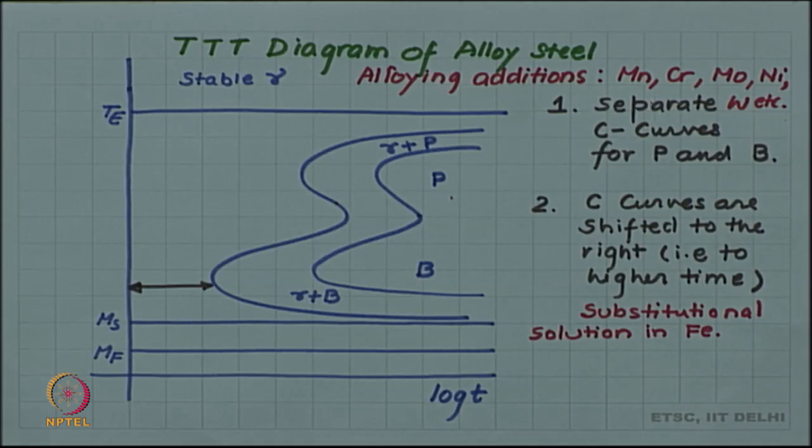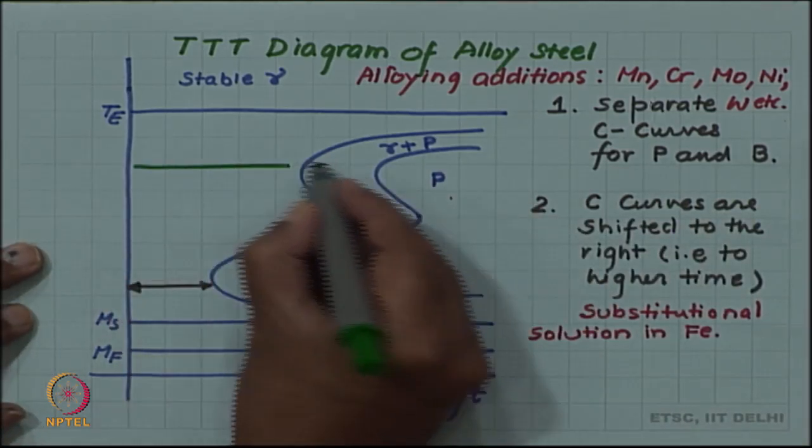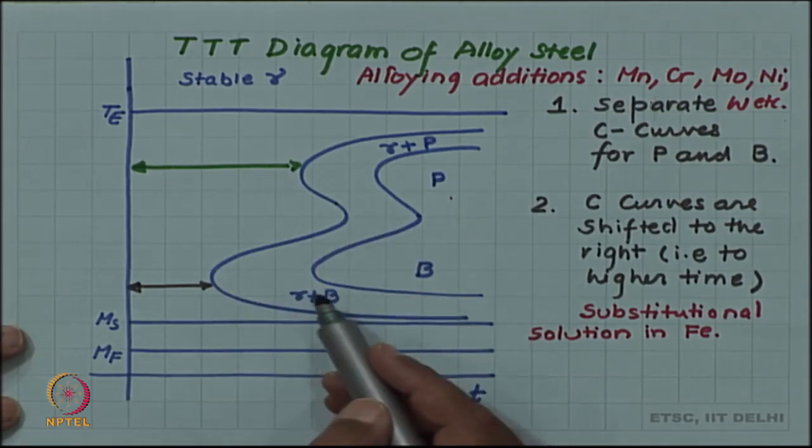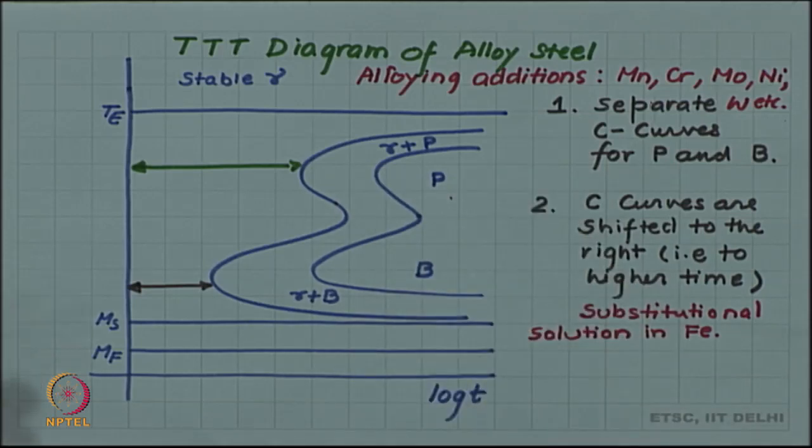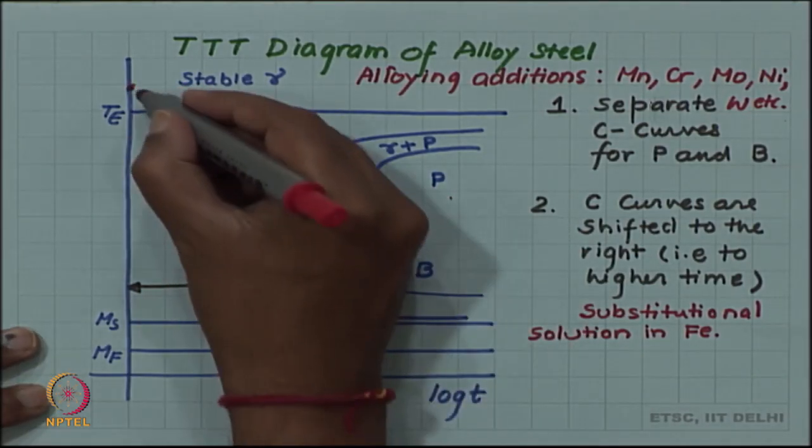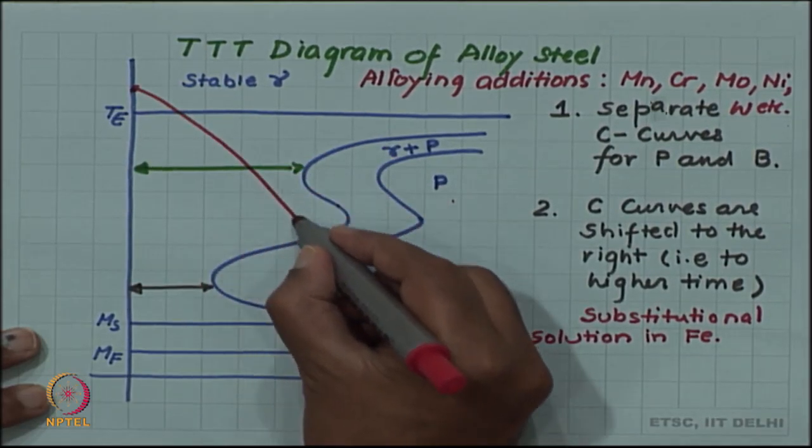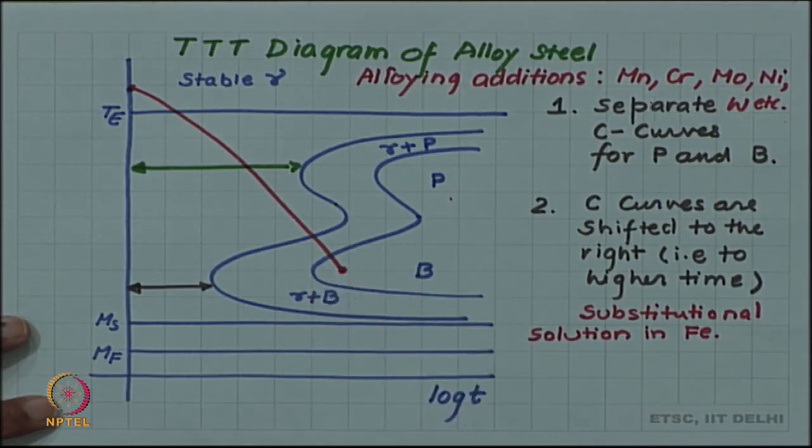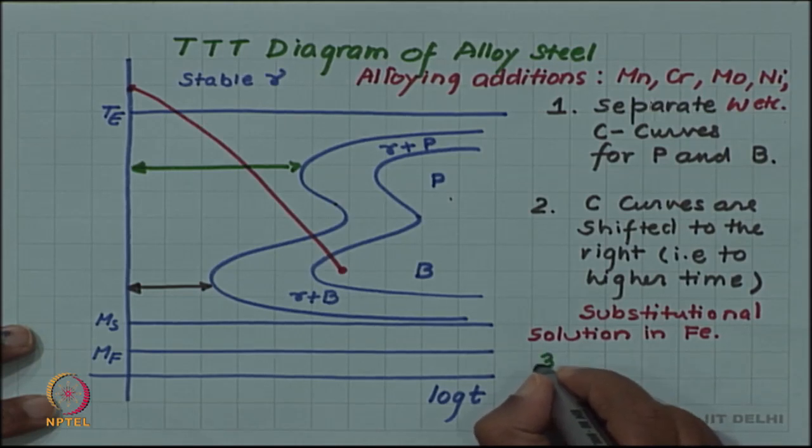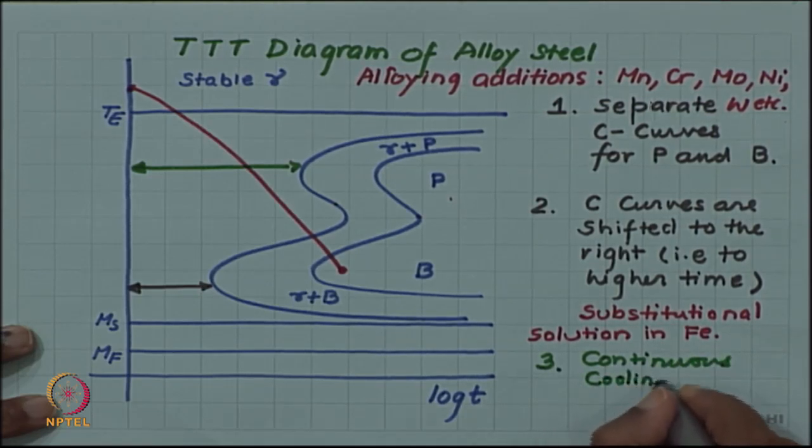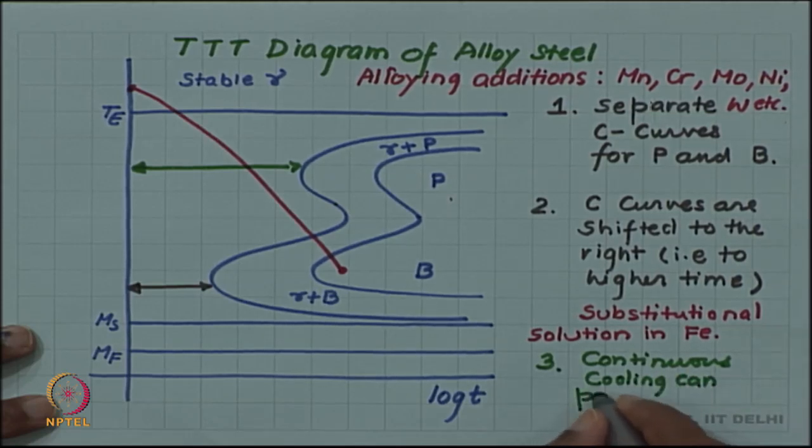Also, you can see that the suppression of pearlite is much more than that of bainite. This exposes bainite nose below the pearlite nose, and so in the case of alloy steel often it is possible to produce bainite simply by a continuous cooling. If I start with austenite and if I choose a cooling rate which avoids the pearlite nose but enters into the bainite region, by continuous cooling I can produce bainite. This is another feature of alloying - continuous cooling. This was not possible in plain carbon steel.